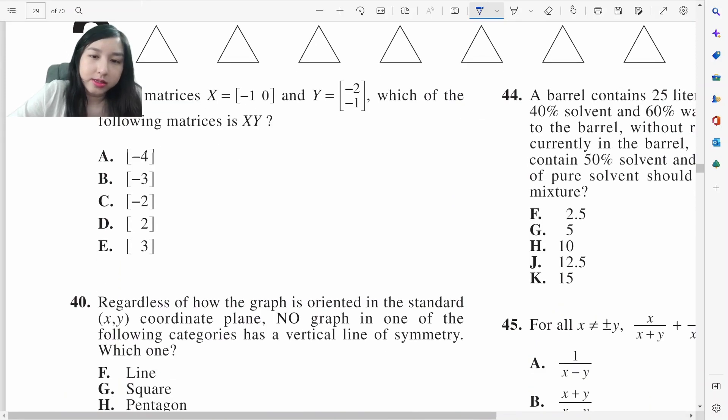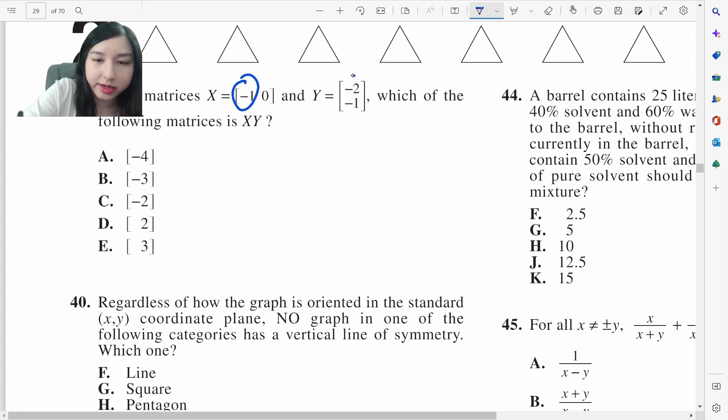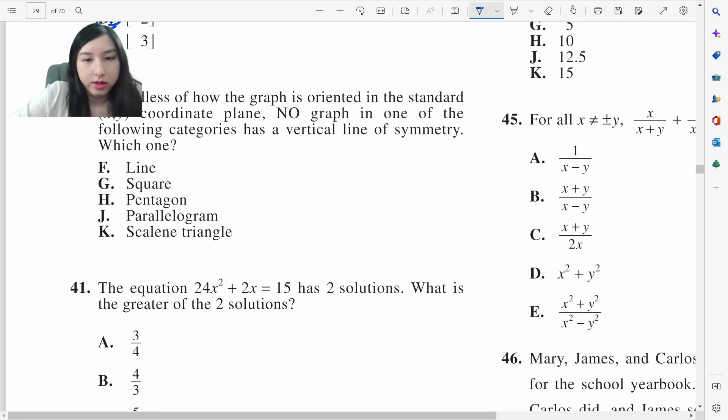Matrix X is this, Matrix Y is that, which is X times Y. So negative 1 times negative 2 is 2 plus 0 times negative 1, which is D. No graph in one of the following categories has a vertical line of symmetry. So it's not symmetrical. Lines are symmetrical, squares are symmetrical, so it's a pentagon and a parallelogram. It's only scaling in triangles.